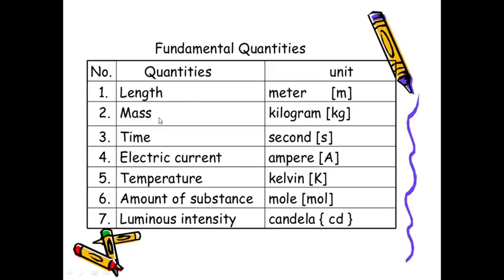Here are the seven basic fundamental units: Length — meter; Mass — kilogram; Time — second; Electric current — ampere; Temperature — Kelvin; Amount of substance — mole; Luminous intensity — candela. These are the seven fundamental SI units: meter, kilogram, second, ampere, Kelvin, mole, candela.